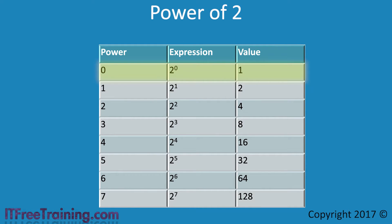2 to the power of 0 gives the value of 1. If you were to count from 0, that is 0 then 1, this would give you two values which allows you to represent a binary switch, which is 1 or 0. 2 to the power of 1 gives a value of 2, so the value has doubled. The next row, 2 to the power of 2, gives a value of 4. The power of 2 table becomes important when converting from binary to decimal or decimal to binary, so it is a good idea to memorize this table.